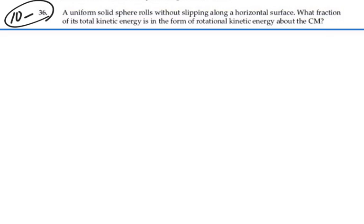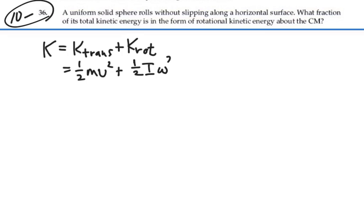So the total kinetic energy of this sphere is going to equal its translational kinetic energy plus its rotational kinetic energy. And that's going to be one-half mass times velocity squared plus one-half moment of inertia times angular velocity squared.